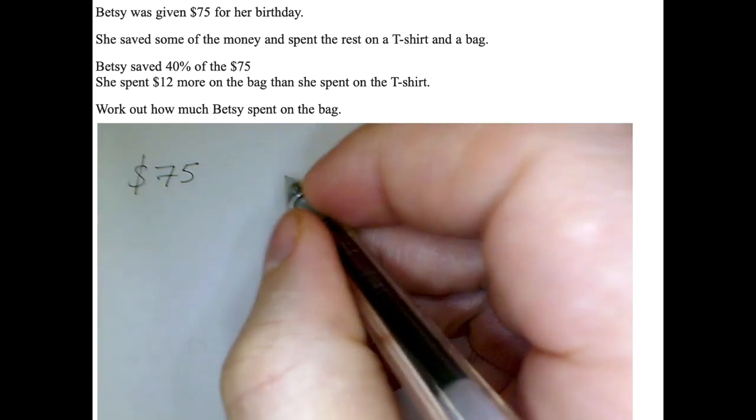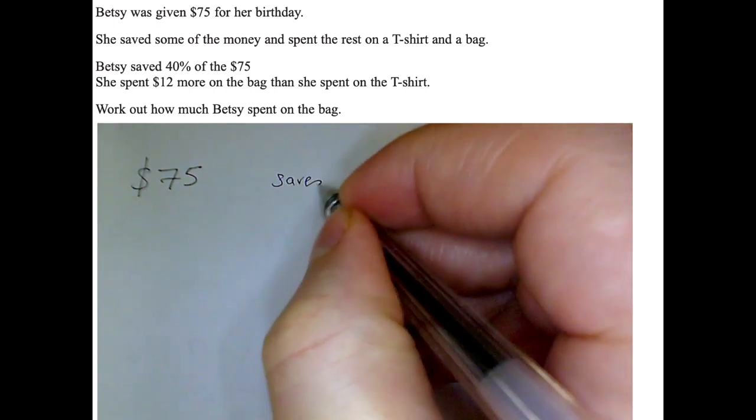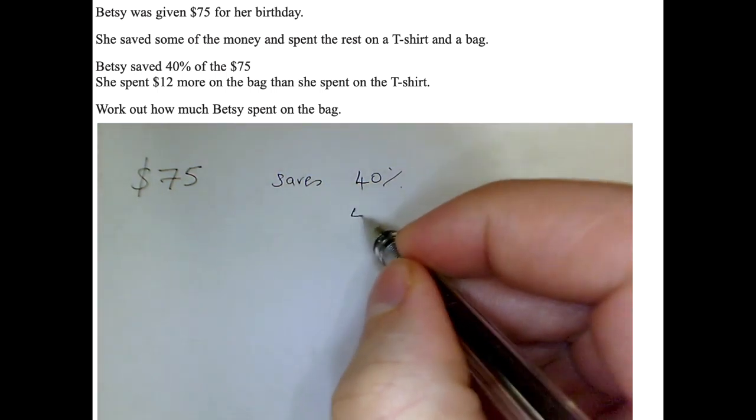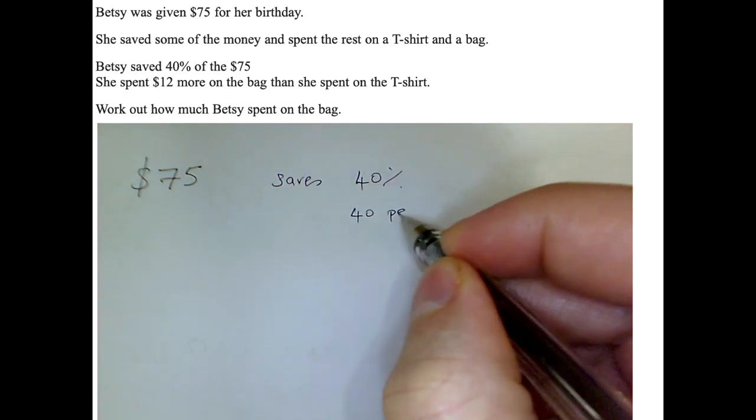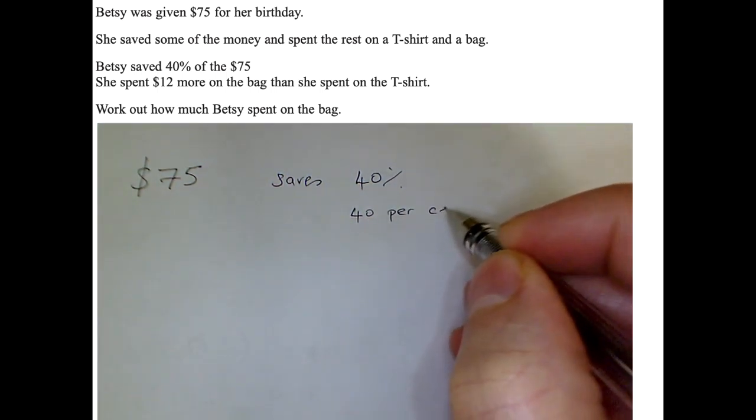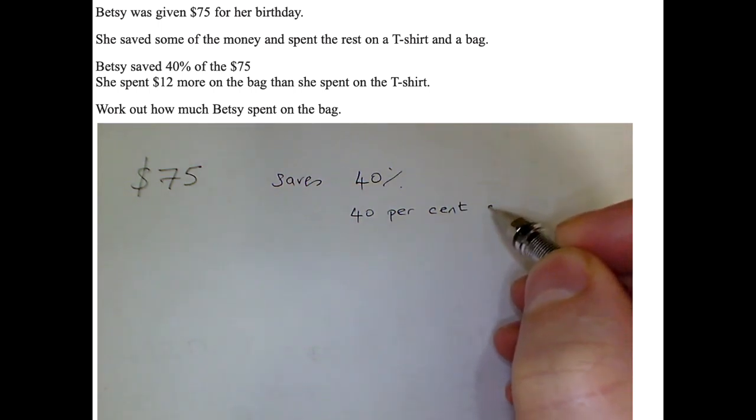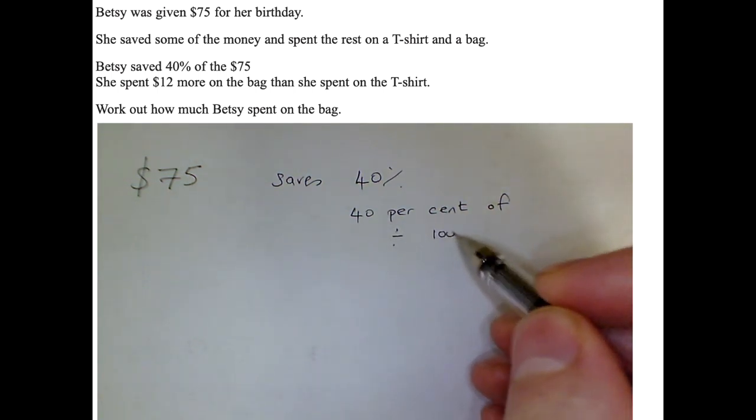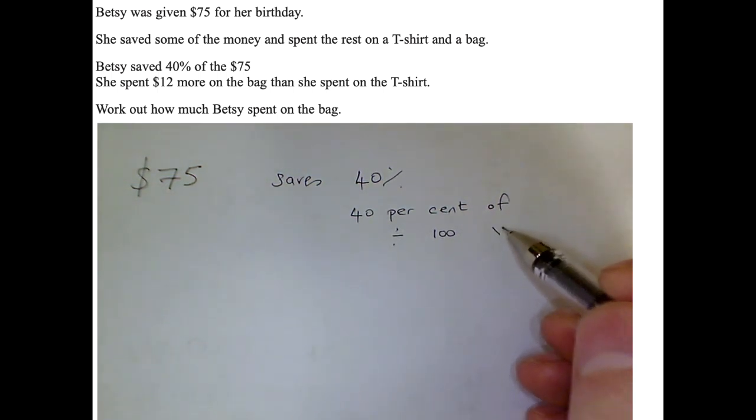So we've got to try and find 40%, so how do we go about that? Well, listen to the actual word, 40% of, that's what the English says. We're going to translate that English into maths. Per always means divide, cent means 100, and of means times.